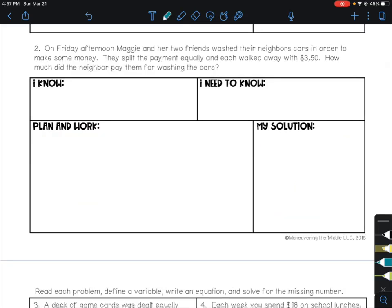For number 2, on Friday afternoon, Maggie and her two friends washed their neighbor's cars in order to make some money. They split the payment equally, and each walked away with $3.50. How much did the neighbor pay them for washing the cars? So right away I saw Maggie and her two friends, which means we have three people. They split the payment equally. That right there is key words for dividing. Split equally. And each, that's another one that tells you divide, each walked away with $3.50. So $3.50 each. How much did the neighbor pay them for washing the cars? So we're looking for the total that the neighbor paid them.